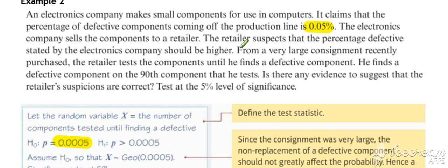The company sells components to a retailer. The retailer suspects that the percentage of defective components stated by the electronics company should be higher, so the alternative hypothesis, a counter argument to the null, needs to be greater than.